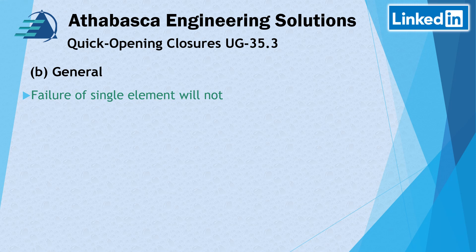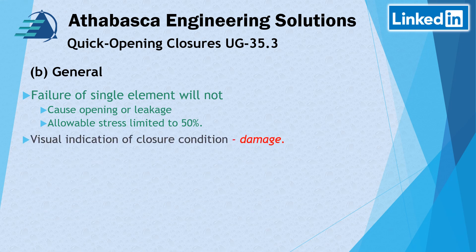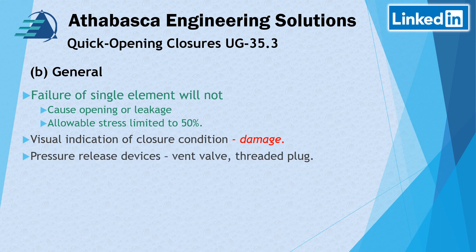For UG35.3, holding elements are parts of the closure used to hold the vessel closure and provide the force required to seal the vessel — they can be hinge pins or bolted flange pins. The general requirements are similar to UG35.2. Failure of a single element will not cause opening or leakage, and allowable stress must be limited to 50%.